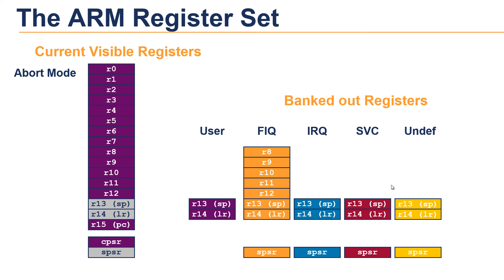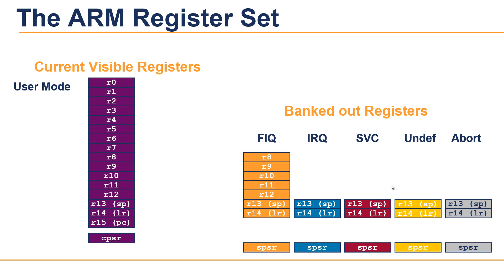This slide shows the same information in a more static way, which is more useful for reference. The main point is the splitting of registers in Thumb state into low and high registers. User mode uses all available registers, but FIQ uses only different R8 to R14 and the SPSR. IRQ uses only three different registers: R13, R14 and the SPSR. Other modes such as SVC and Abort also follow the same set of rules.